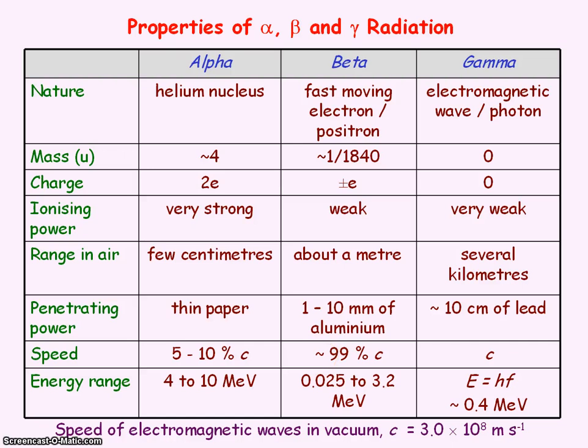Whereas for beta radiation, the particles from a particular source will have a continuous range of energies. And that's because they share their energy with the neutrino or the anti-neutrino that accompanies their emission.